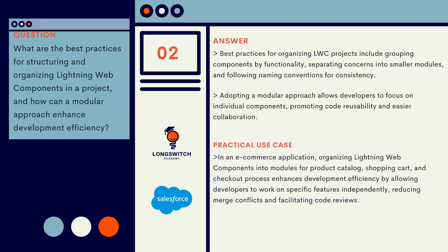Best practices for organizing LWC projects include grouping components by functionality, separating concerns into smaller modules, and following naming conventions for consistency. Adopting a modular approach allows developers to focus on individual components, promoting code reusability and easier collaboration. In an e-commerce application, organizing Lightning Web Components into modules for product catalog, shopping cart, and checkout process enhances development efficiency by allowing developers to work on specific features independently, reducing merge conflicts and facilitating code reviews.